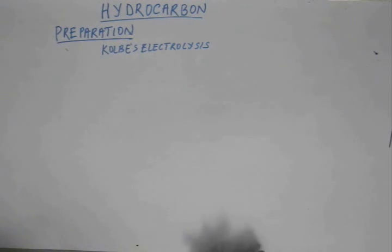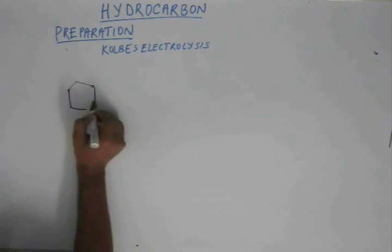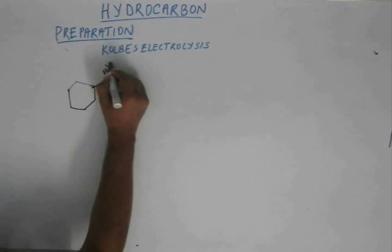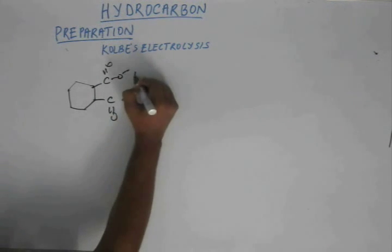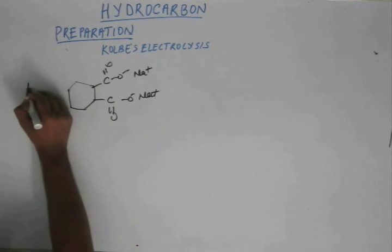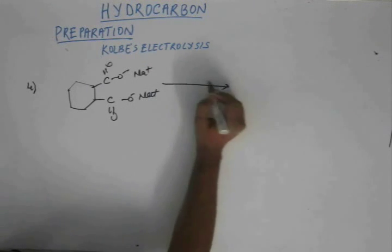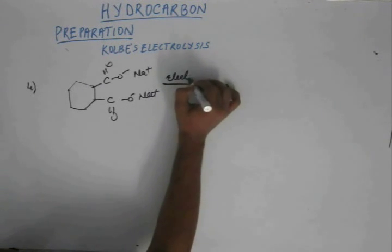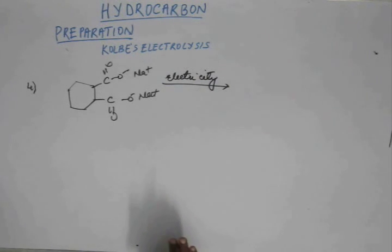Now let's solve a different class of question having 2 carboxylate ions. Suppose this is a salt provided and I am carrying out Kolbe's electrolysis. Suppose I am passing electricity through the solution having this compound. The procedure will be all exactly the same as previous.